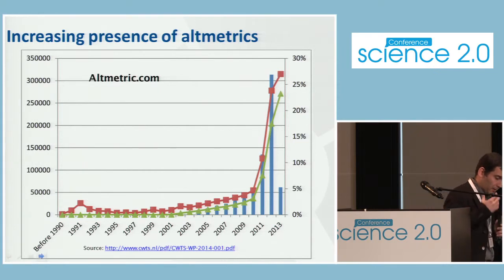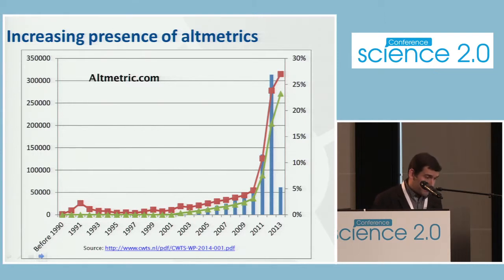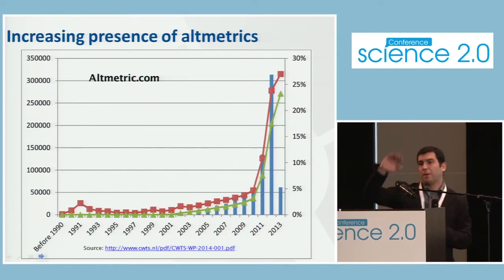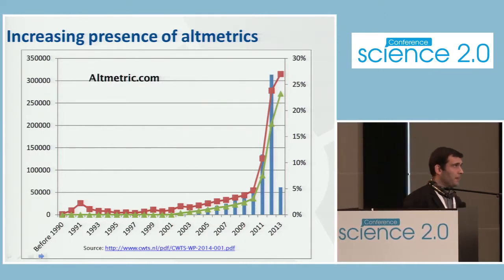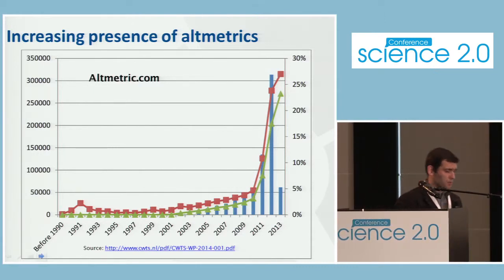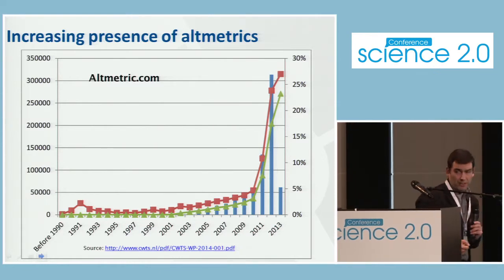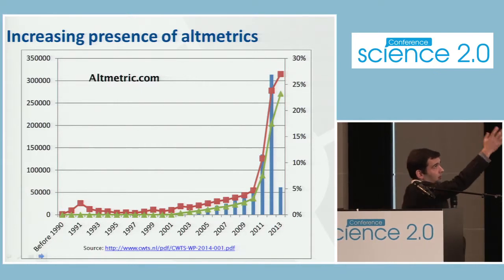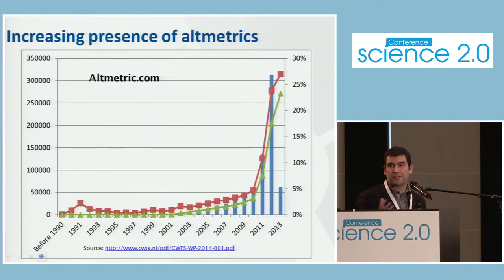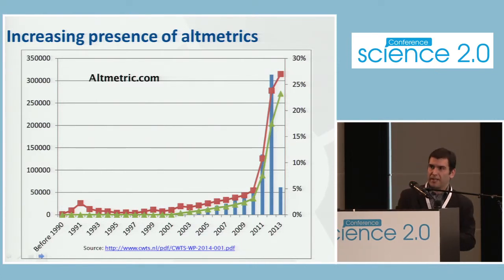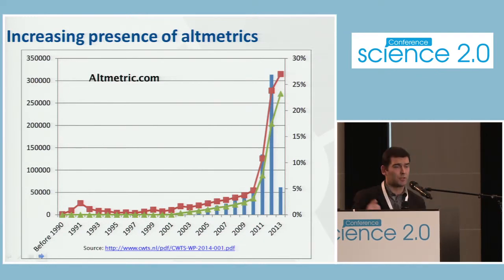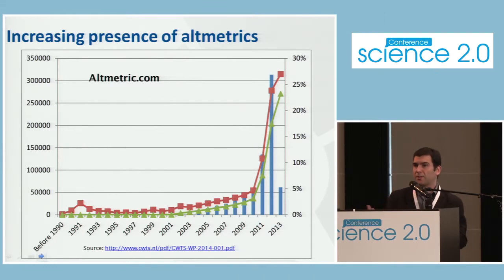Regarding coverage, Altmetrics are increasing over time. Based on data from Altmetric.com, which started in 2011, the percentage of publications with some Altmetric activity has increased, though coverage is still around 20-25%. Mendeley is a different story — its coverage can be over 70% or even 80%, depending on the field. The presence of Altmetrics in publications is increasing over time.